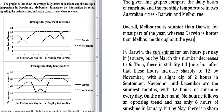November and December are the sunniest months in Darwin, with 12 hours of sunshine every day.